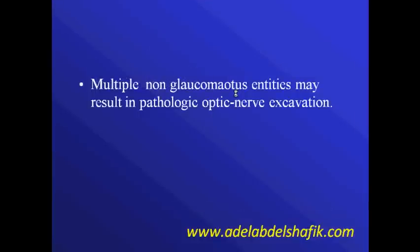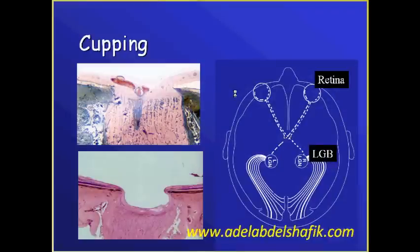There are multiple non-glaucomatous entities that may result in pathological optic disc excavation. We know we have a very long axon starting in the ganglion cells in the retina ending in the lateral geniculate body. These axons form the optic disc, and when some of these axons disappear, cupping will be the case.